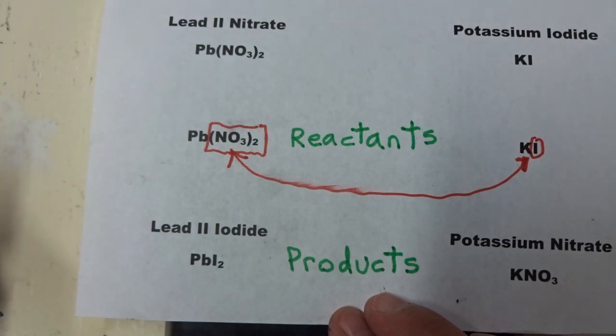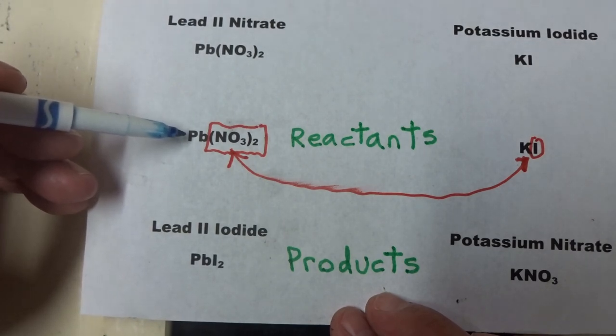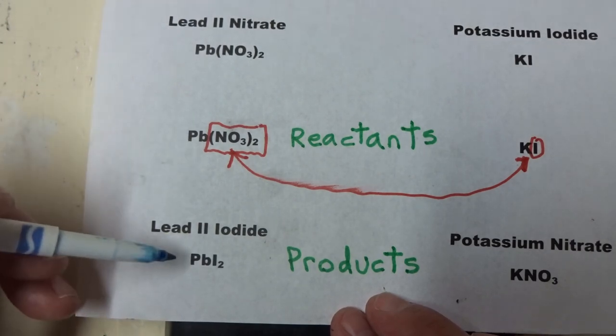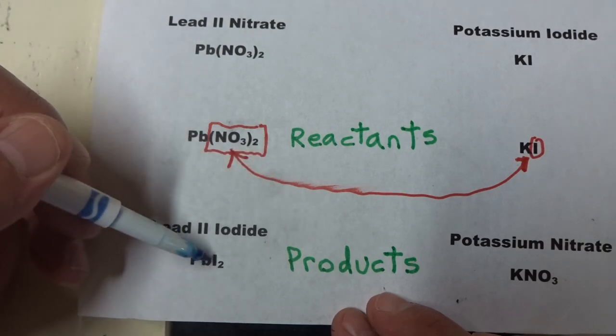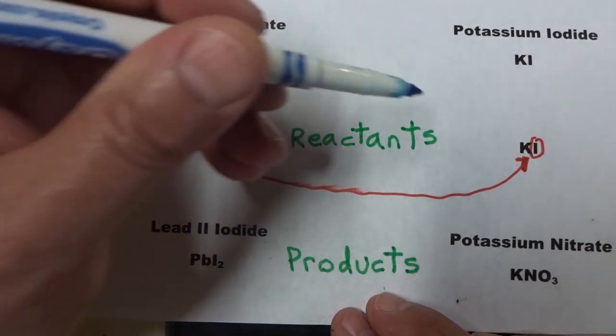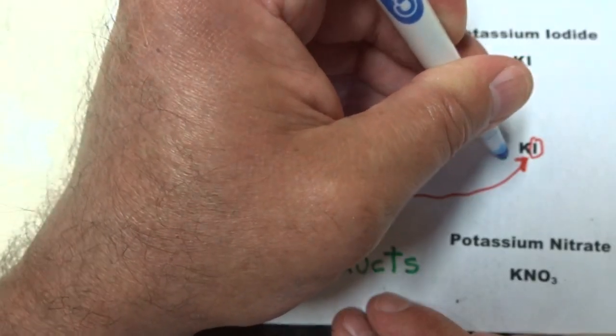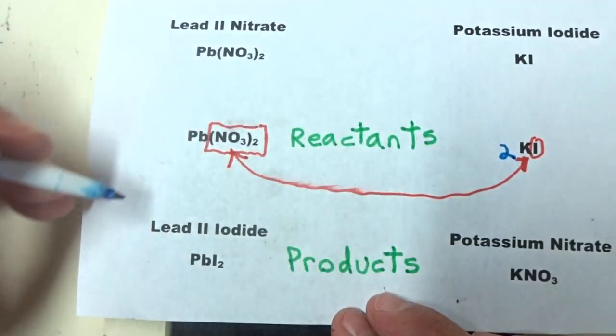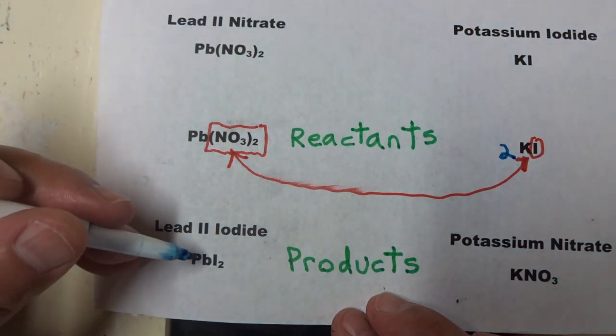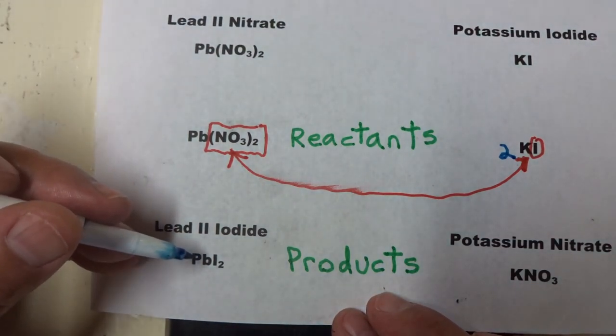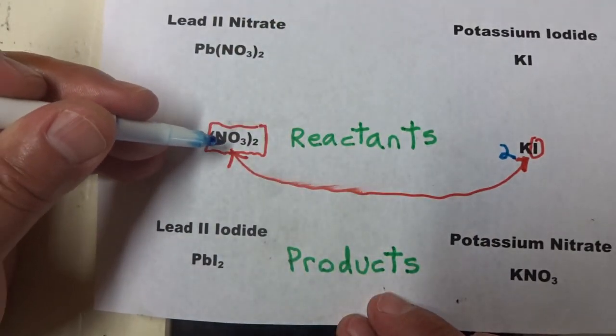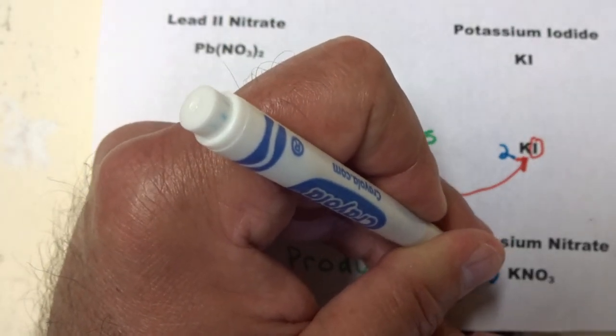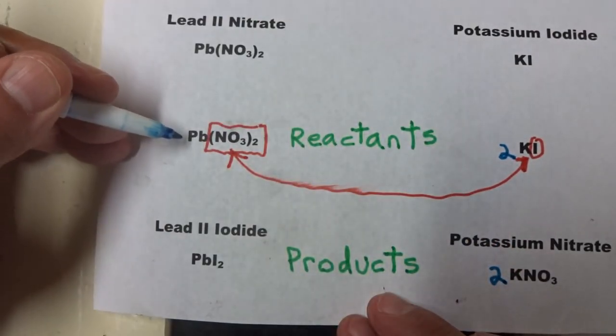Now all we have to do is balance the equation. And you remember how we do that. We have one lead here in the reactants. And we have one lead here in the products. So that's balanced. We have two iodine in the products. We need to put a prefix two in front of potassium iodide. Now that's balanced. We have one NO₃ here. And we have two NO₃ here. So we'll put a two here to balance with that.